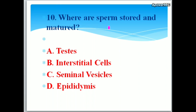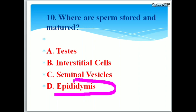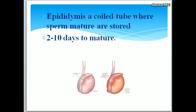Where are sperm stored and matured? Options: A. Testis, B. Interstitial cells, C. Seminal vesicles, D. Epididymis. The correct answer is epididymis — a coiled tube where sperm are matured and stored, taking 2 to 10 days to mature.